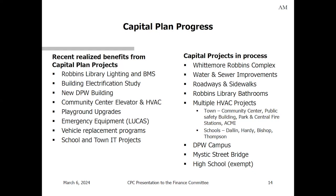Current capital projects underway include Woodrow/Robbins construction, water and sewer improvements, roadways and sidewalks. We're approaching the spring roadway construction season. Robbins Library bathrooms are a CPA-funded capital project. The DPW campus is working toward completion. The Mystic Street Bridge is finally going out to bid in the next month or so. The high school phases one and two are complete; we're on to phase three, the athletic building, and phase four will be fields in calendar year 2025.